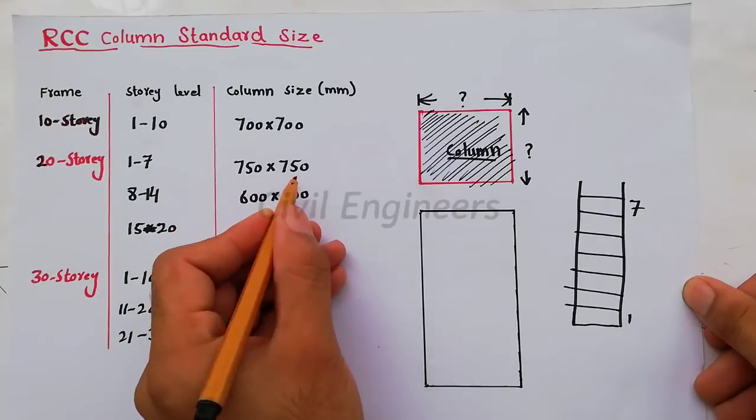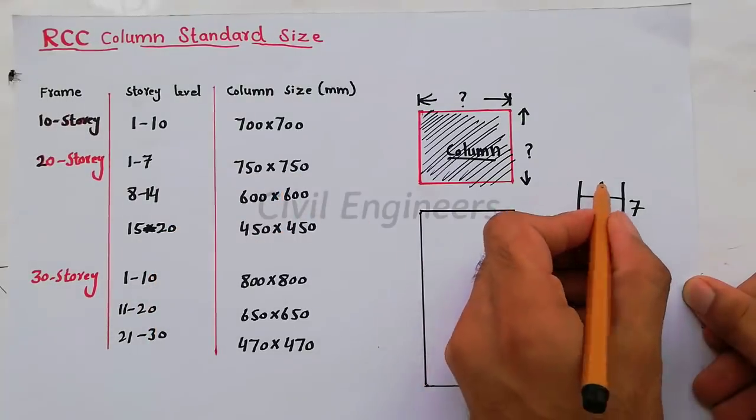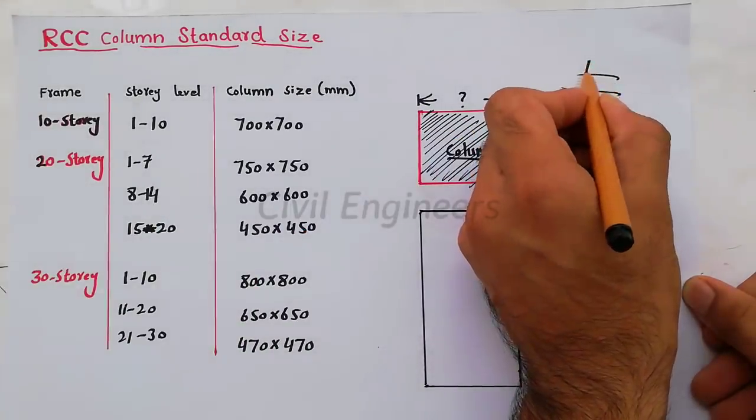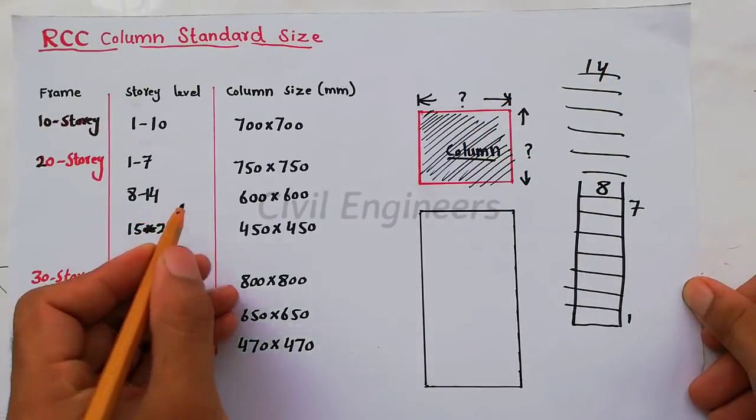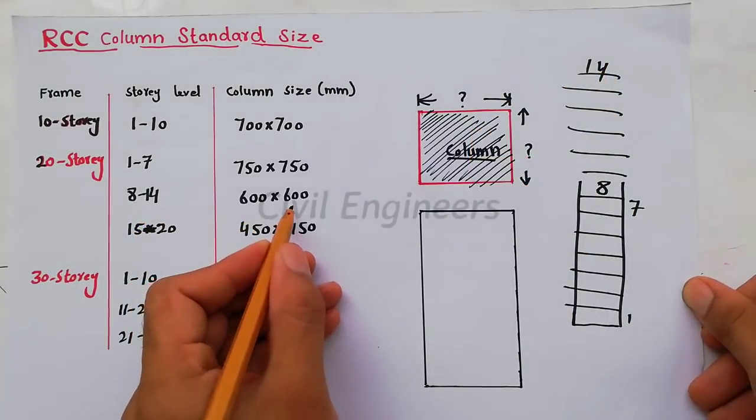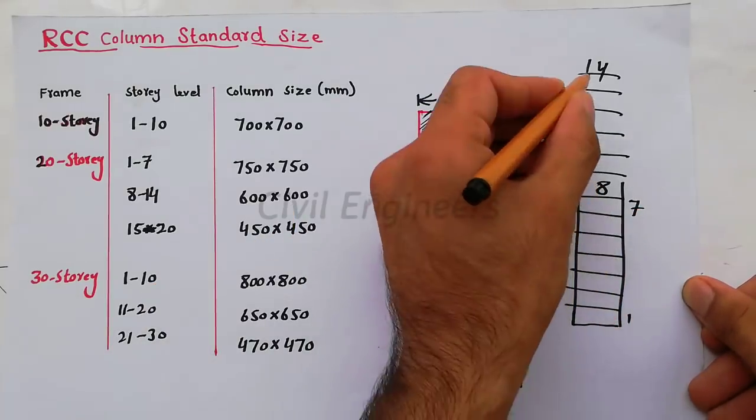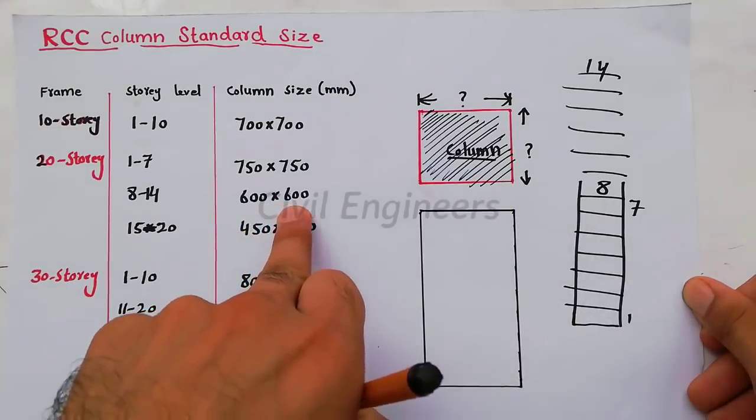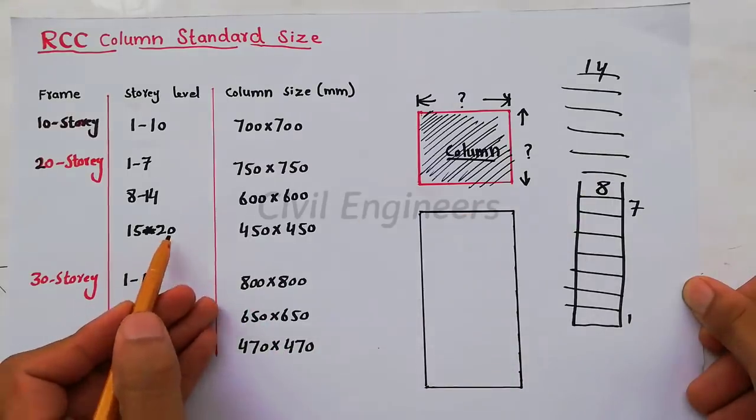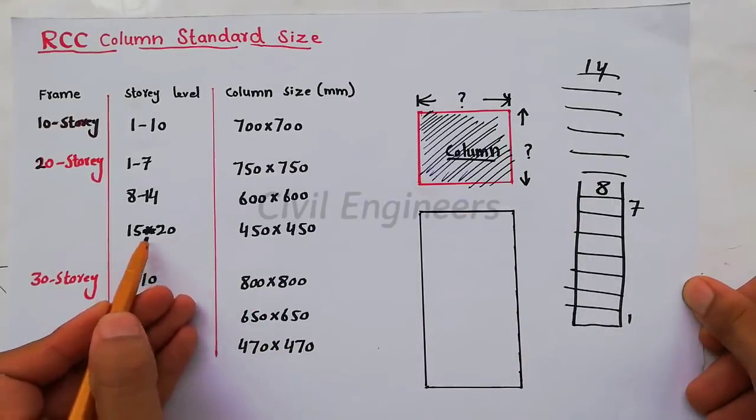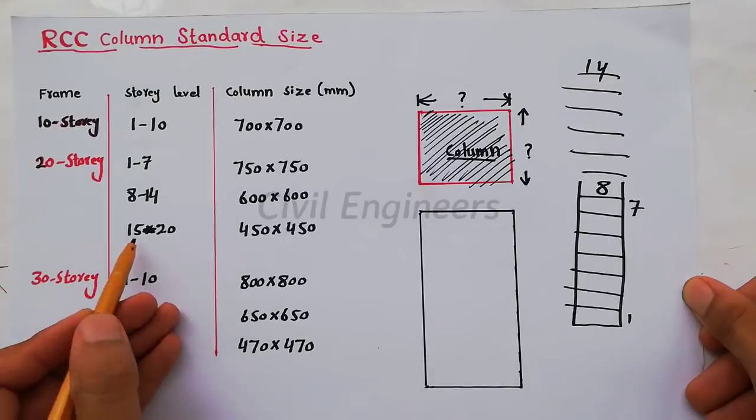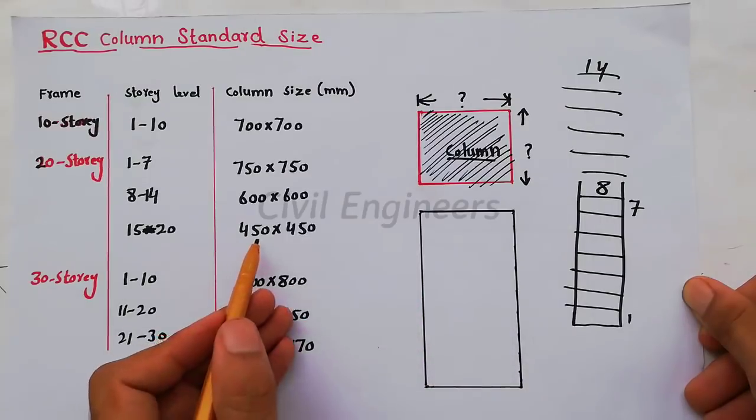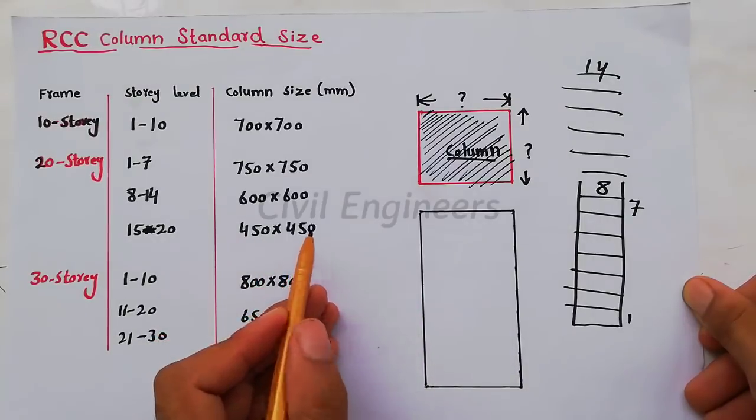After 7, from 8 to 14 story level, we have to select column size 600 by 600mm. After that, from 15 to 20 story level, we have to take size of the column 450 millimeter by 450 millimeter. Remember this point.